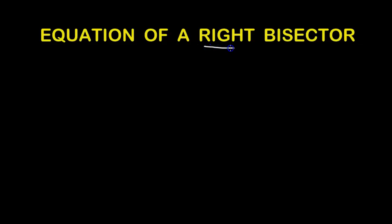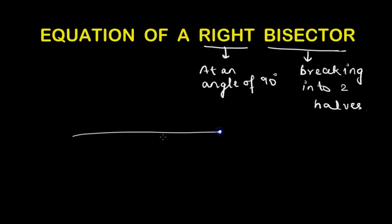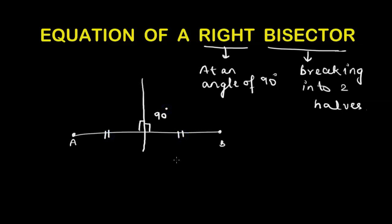The name 'right bisector' suggests its meaning. 'Right' means at an angle of 90 degrees, and 'bisecting' means breaking into two halves. Therefore, if we are given a line segment AB and asked to draw its right bisector, the right bisector is a line that meets AB at an angle of 90 degrees and also breaks AB into two equal halves.